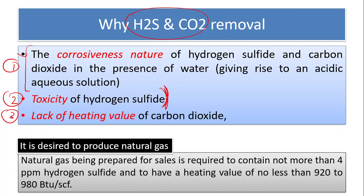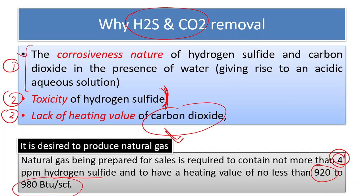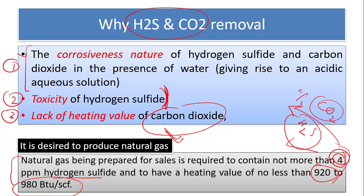Hydrogen sulfide is very toxic. As far as carbon dioxide is concerned, it acts as a diluent for the heating value. Normally, the desired natural gas is required to contain not more than 4 ppm of hydrogen sulfide, and to have a heating value of not less than 920 to 980 Btu per standard cubic feet. These two conditions together limit the allowable percentages of both CO2 and H2S.